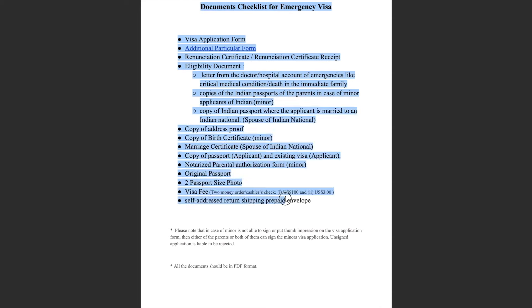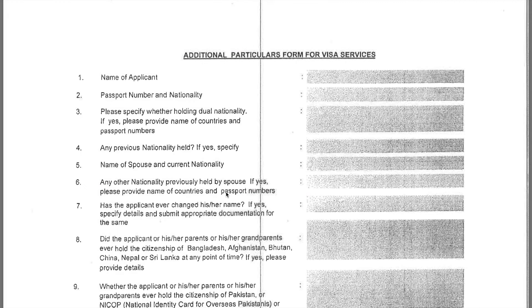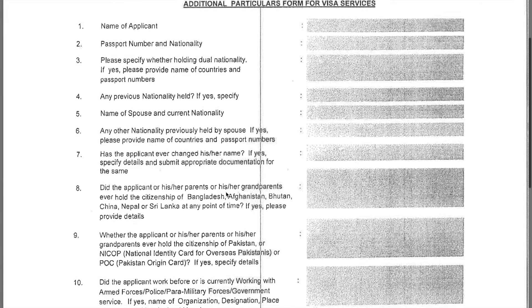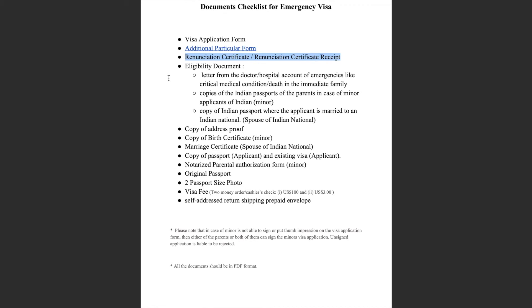These are the document checklist for sending your emergency visa application. The first item is the visa application which we filled on the government portal. Next is the additional particulars form — you have to print this, fill it manually, and then scan it. If you have acquired US citizenship by naturalization, then you have to submit the renunciation certificate.